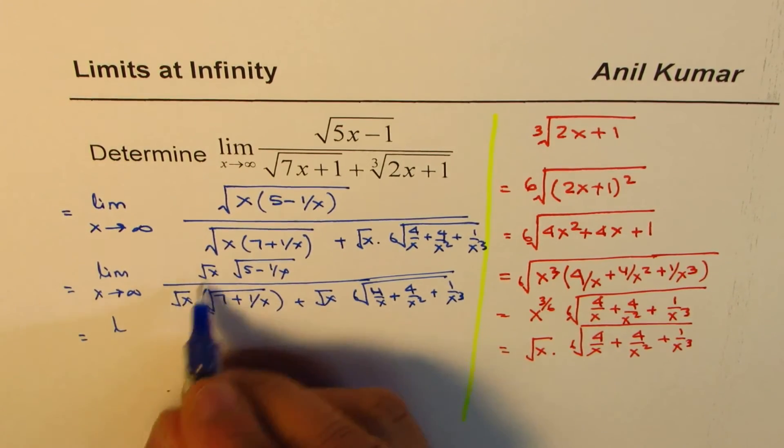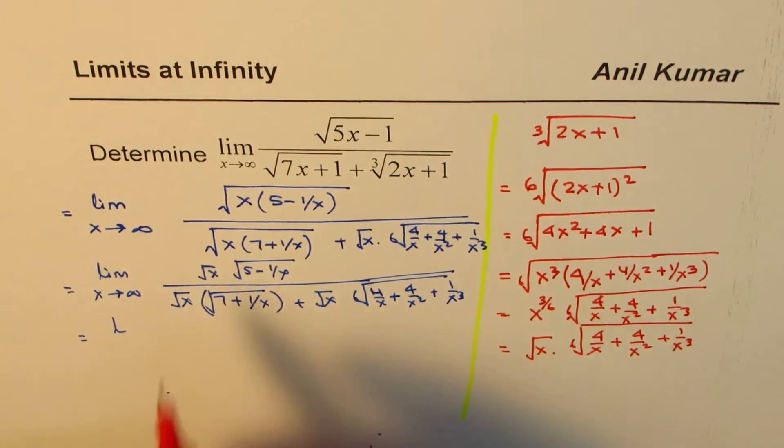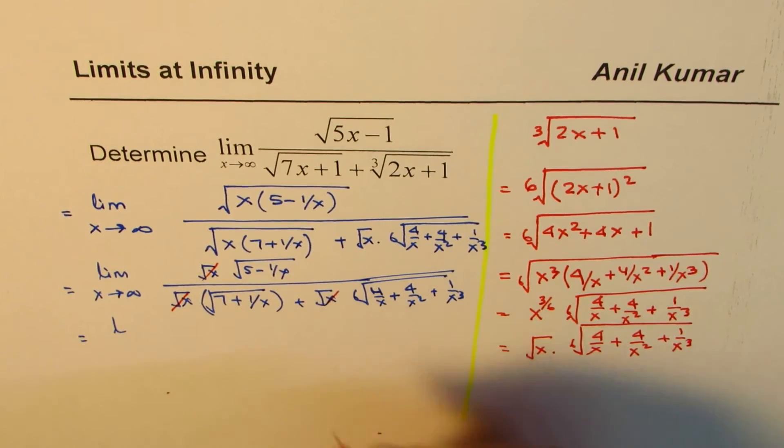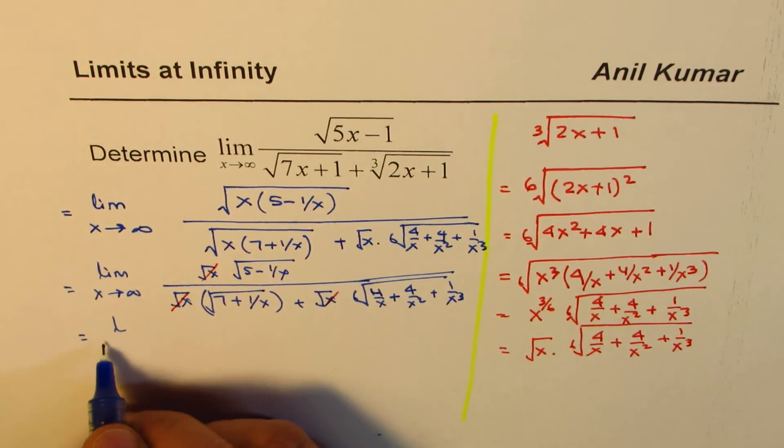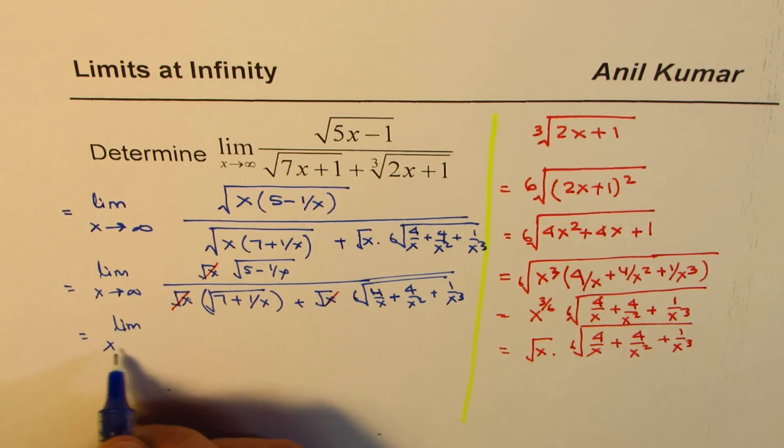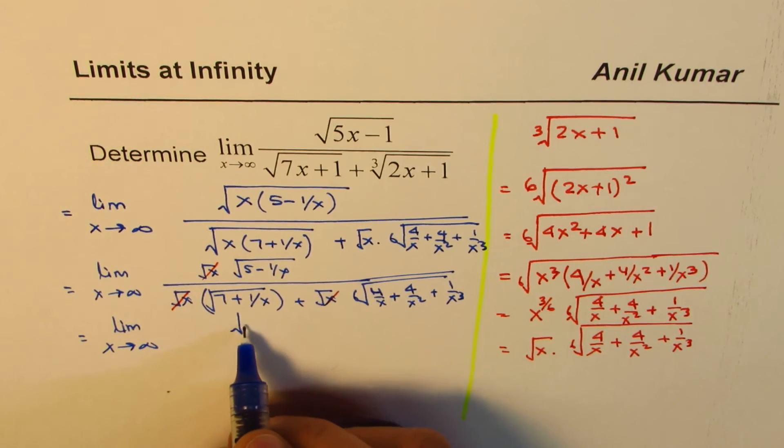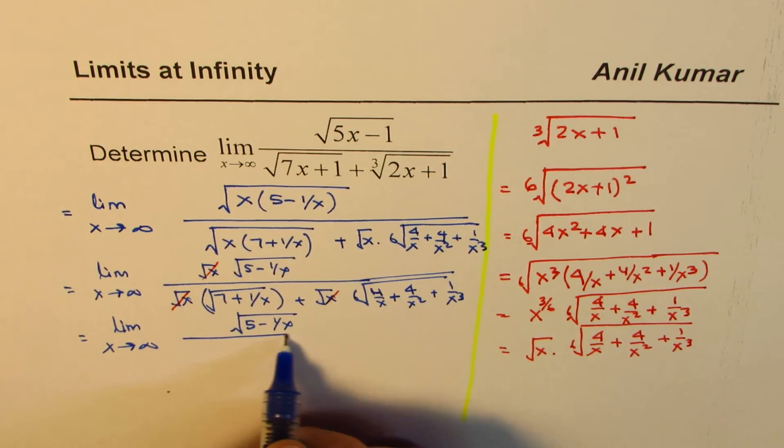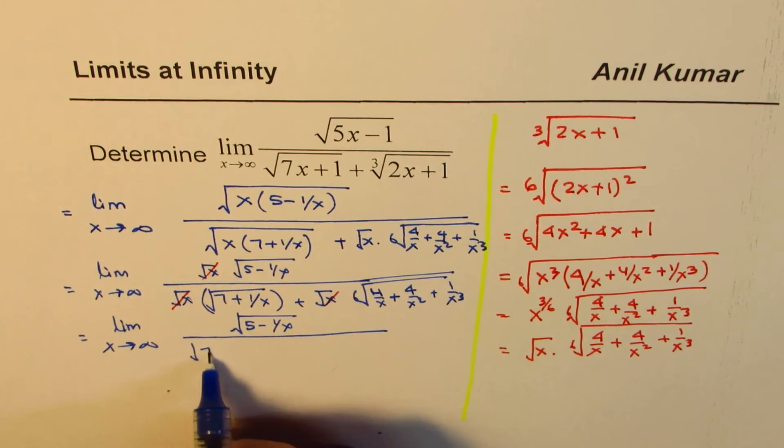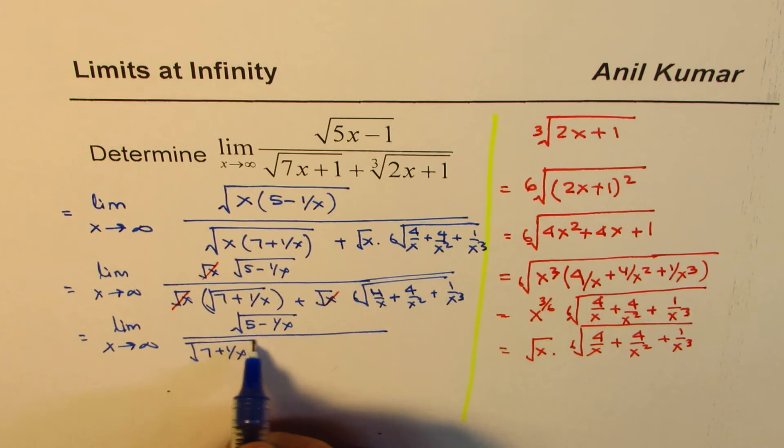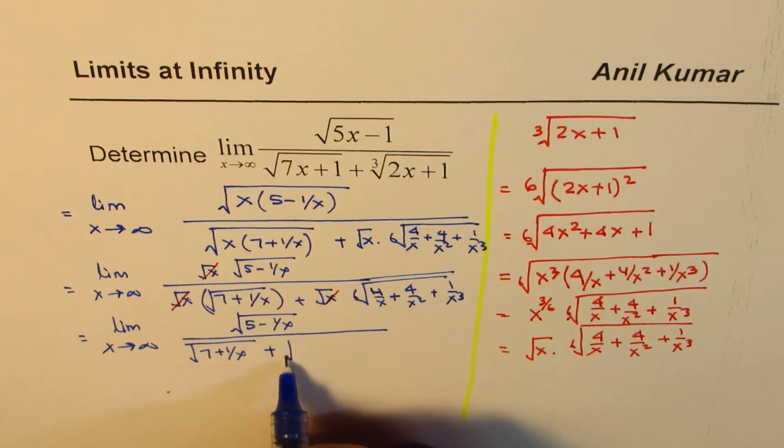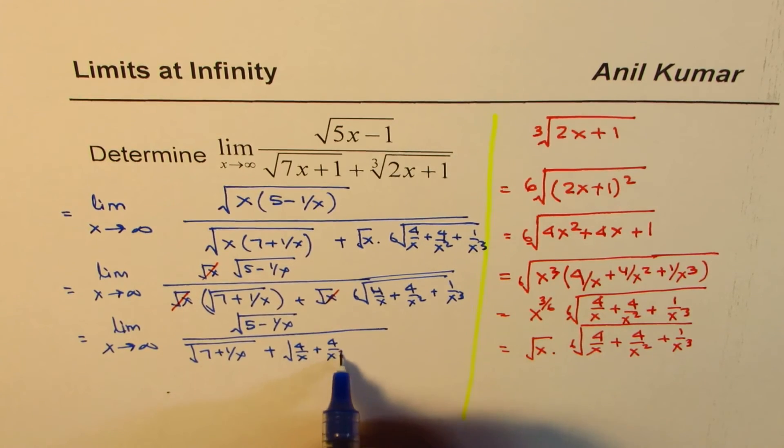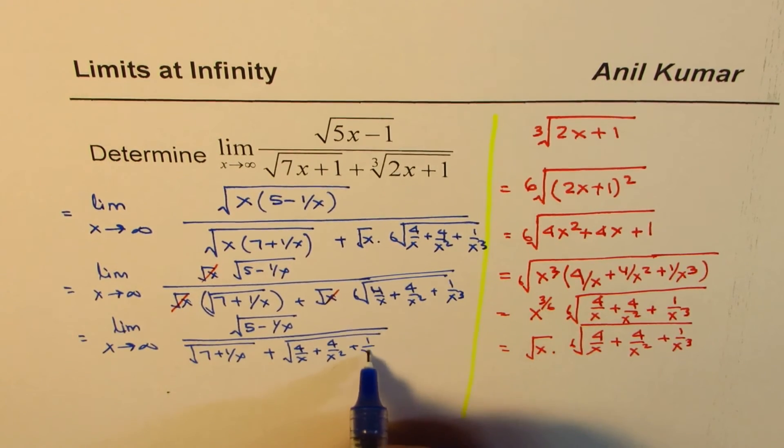Now, we can cancel out these square roots. They are common factors, correct? So we get limit x approaches infinity and we have square root of 5 minus 1 over x over square root of 7 plus 1 over x plus sixth root of 4 over x plus 4 over x square plus 1 over x cube.